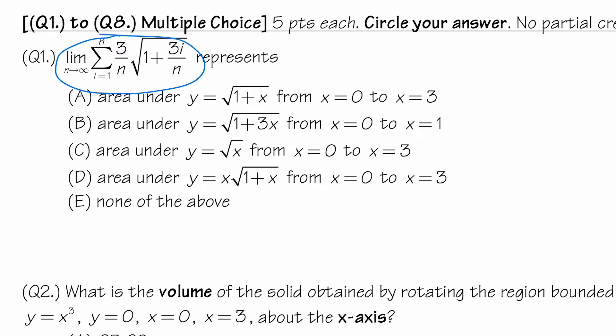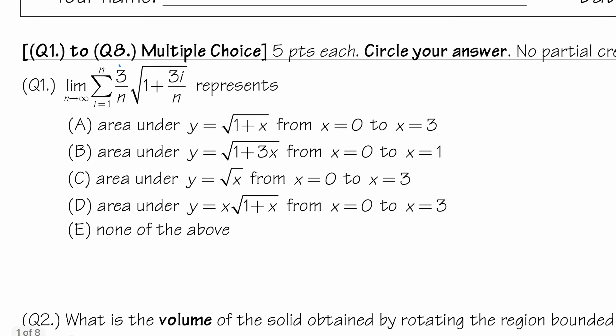We have a crazy looking limit, but it's not so bad because this is just a Riemann sum limit. First, pay attention to the 3 over n, because this 3 will tell you that b minus a is equal to 3. So the width of the interval will be 3. It can be going from 0 to 3, 1 to 4, or 7 to 10, etc. But because they're all going from 0, we know it will be going from 0 to 3. So you know b is not the answer.